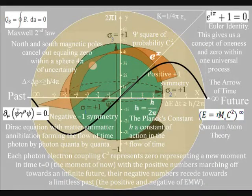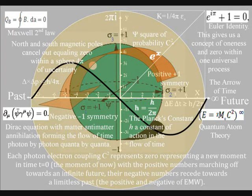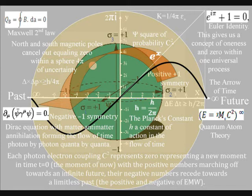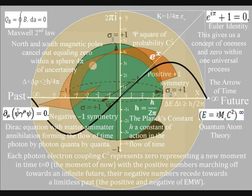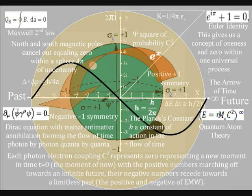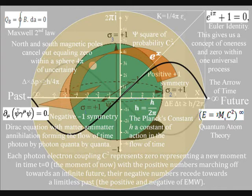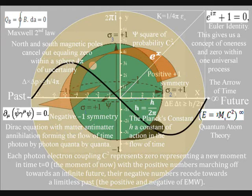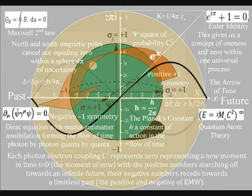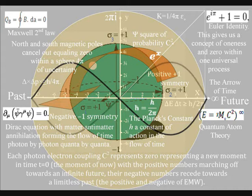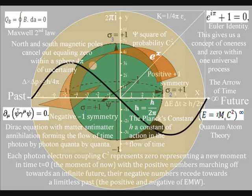This diagram shows a complex plane with the positive and negative numbers and the imaginary numbers going off at right angles, with 0 in the centre. This still represents the geometry of a physical process. The 0 represents zero time, or t equals 0 — the moment of now — formed by light interacting with matter, with the positive numbers forming a potential future and the negative numbers receding towards a limitless past, representing the positive and negative of electromagnetic waves. In the top left-hand corner we have Maxwell's second law, with north and south magnetic poles cancelling out, equalling 0 within a sphere of uncertainty. This forms the continuous flow of electric charge with the movement of electromagnetic fields.